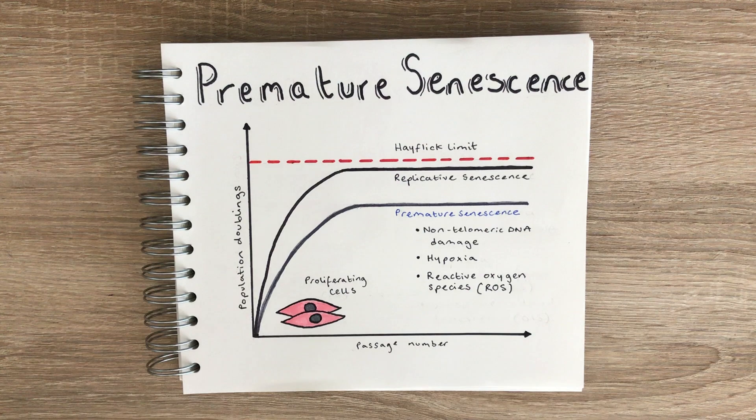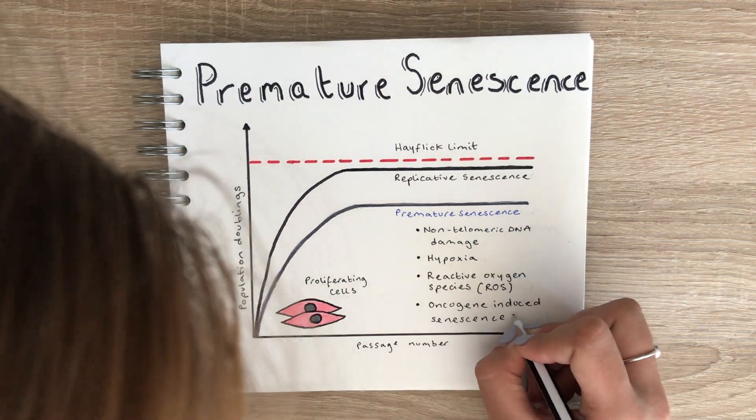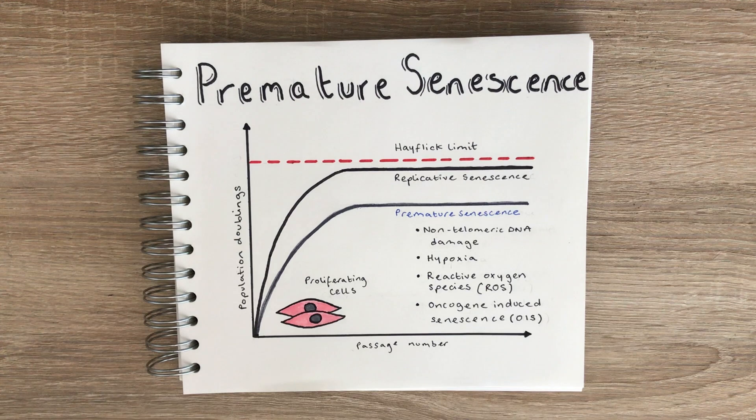Biologically, ROS are formed as a natural by-product of normal metabolism, and this kind of stress can cause senescence through the MAP kinase protein P38, which then activates the P53/P21 pathway. Interestingly, in contrast to the traditional view that oncogenes promote proliferation in cancer, oncogenes have also been found to be potent inducers of senescence. This initial discovery came when an oncogenic form of the oncogene RAS was expressed in fibroblasts and gave a phenotype very similar to replicative senescence, and since then the list of oncogenes implicated has risen to over 50.